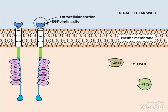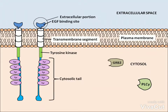These receptors often have only one transmembrane segment. In the cytosol, a portion of the receptor forms the tyrosine kinase, which shows enzymatic activity. The remainder of the receptor constitutes a cytosolic tail. This cytosolic tail contains a series of tyrosine residues, which are substrates or targets for the tyrosine kinase.